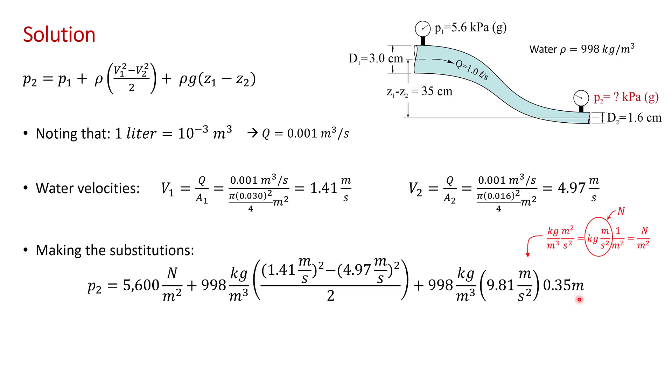Of course, you should always check that the units balance, as I've done here. So, we have kilogram per cubic meter times meter squared per second squared. And here, I factored out the kilogram meter per second squared, which is a newton. And we end up with newton per meter squared.